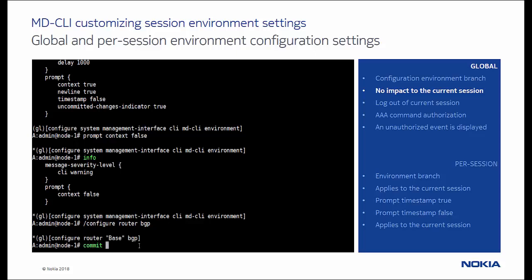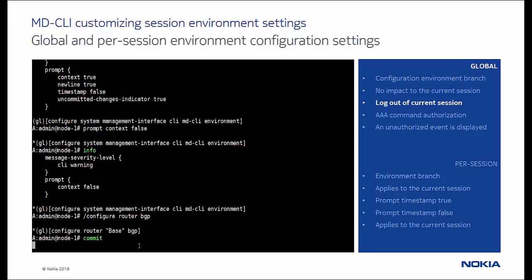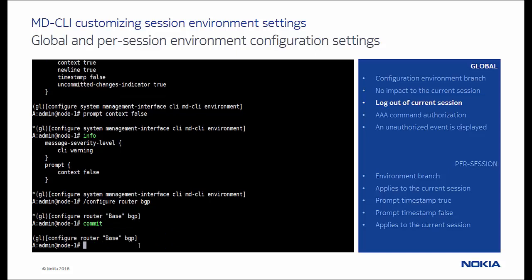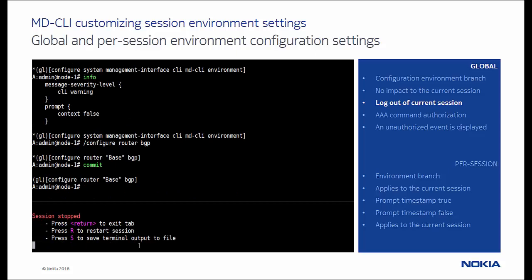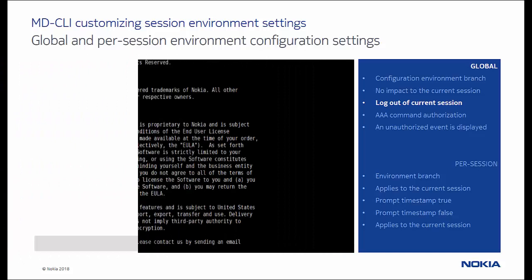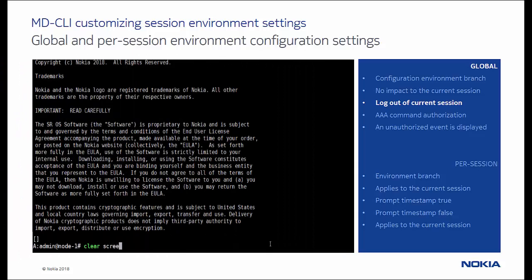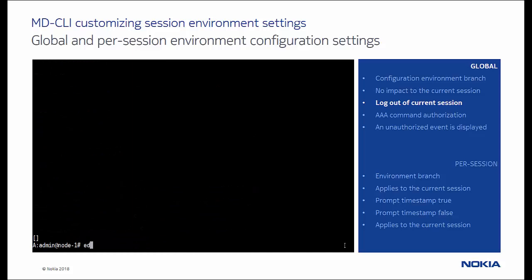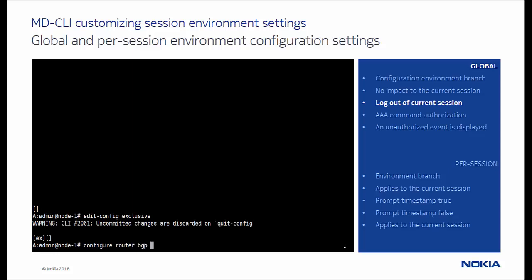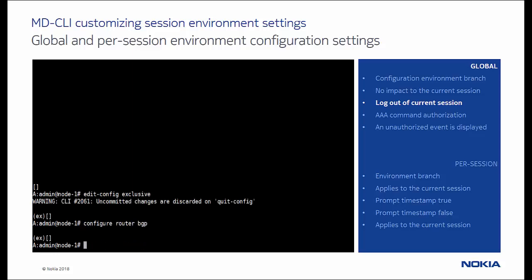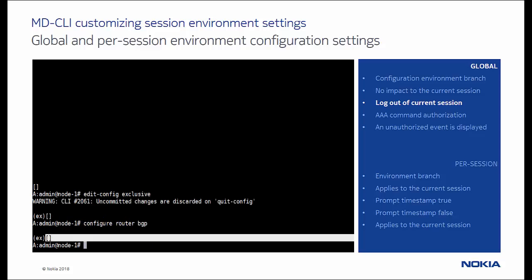Let's commit the current changes, logout of the current session using the logout command, and start a new CLI session. When we navigate in the new session to the configure root of BGP branch, for example, we notice that this context is not displayed in the prompt anymore.